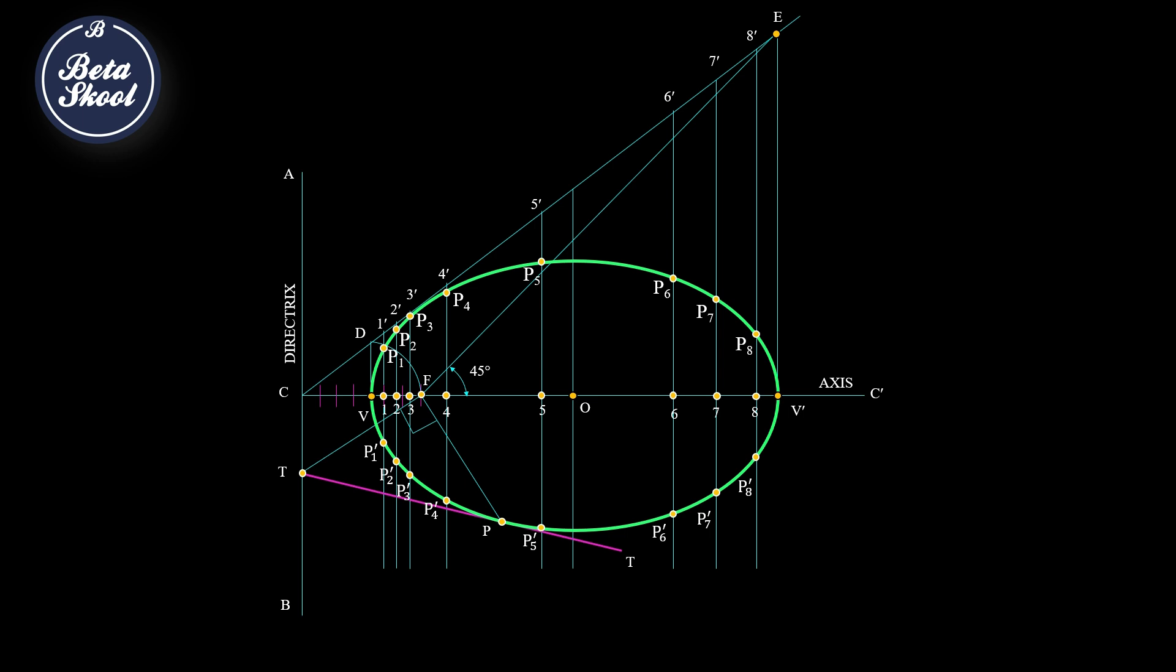To draw the normal, simply draw a perpendicular line at point P on the tangent TT. Label this NN. This is the required normal.